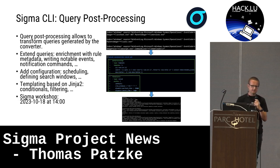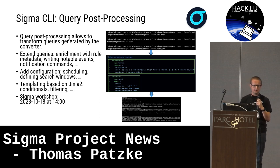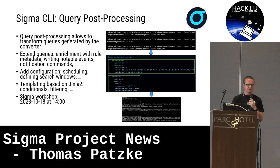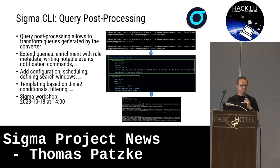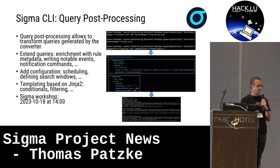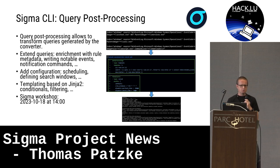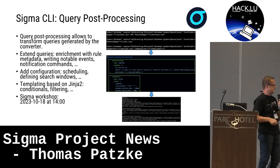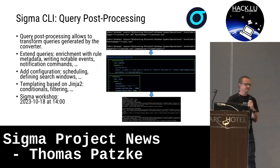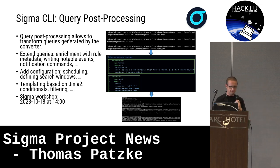Sigma CLI also got a new feature: query post-processing. It doesn't only output the queries anymore — you can also add additional stuff around them. It's based on the Jinja2 templating engine and you can extend your output with parts of the rules. For example, adding rule title or IDs to notable events and alert events in Splunk queries, or also adding some scheduling configuration to your output. In this screenshot you can see it adds scheduling information and the search window information in a savedsearches.conf for Splunk.